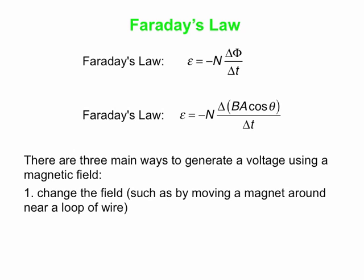For instance, change B, change the magnetic field. How do you do this? Well, let's say you have a loop of wire or a coil of wire and you have a magnet. You just move the magnet around near the loop or coil. That'll change B. That'll give you a voltage.